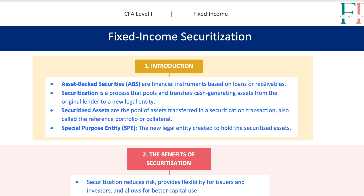Imagine you're a lender with a bunch of loans on your books — maybe car loans, mortgages, or credit card receivables. What if there was a way to bundle those loans, sell them off to investors, and get money up front? That's exactly what asset-backed securities, or ABS, allow lenders to do. Through a process called securitization, cash-generating assets like loans are pooled together and sold as securities to investors.